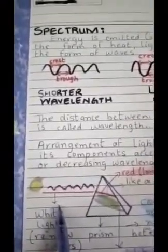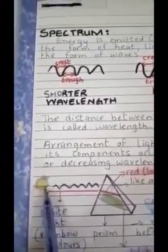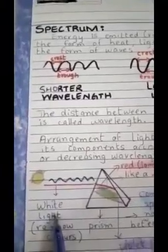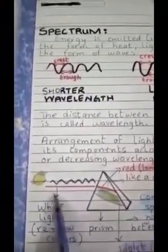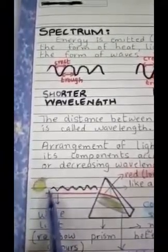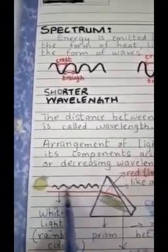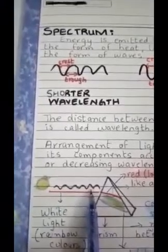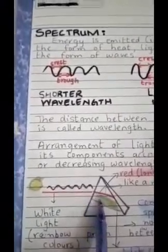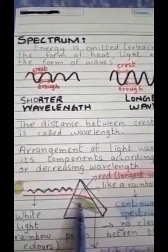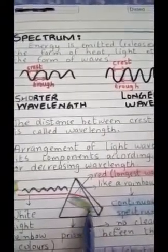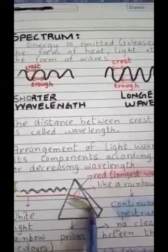White light coming from the sun. Now, what is white light? White light is the rainbow colors. White light coming from the sun in the form of waves. You can see over here. Now, when light waves enter the glass prism, it splits into seven colors, according to their wavelength.